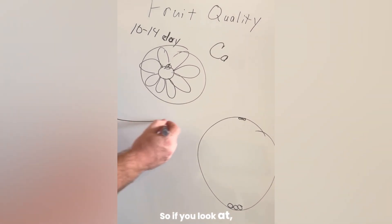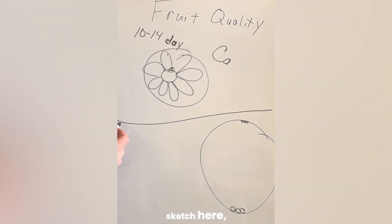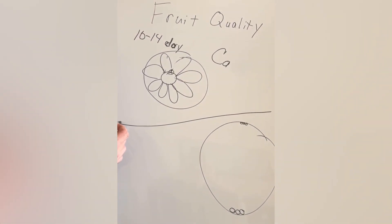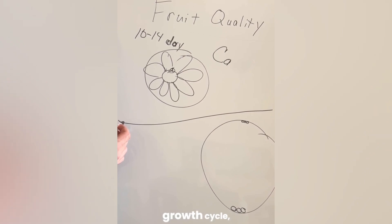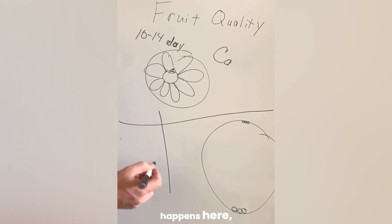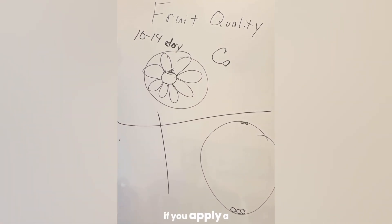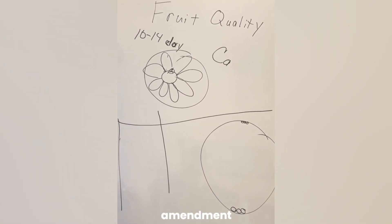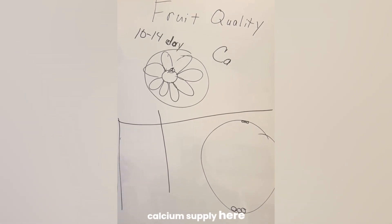So if you look at—imagine me drawing a sketch here—if you look at a plant's annual growth cycle, and let's just say this blossoming pollination window happens here, what happens if you apply a calcium soil amendment? You're looking at calcium supply here on the vertical axis.